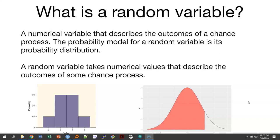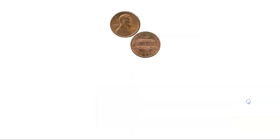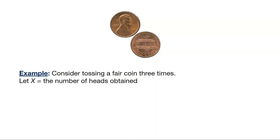So a random variable can really take any number that describes some outcomes of some process. As an example, think about tossing a coin three times. We could have X be the number of heads that we obtain after we toss those three coins.